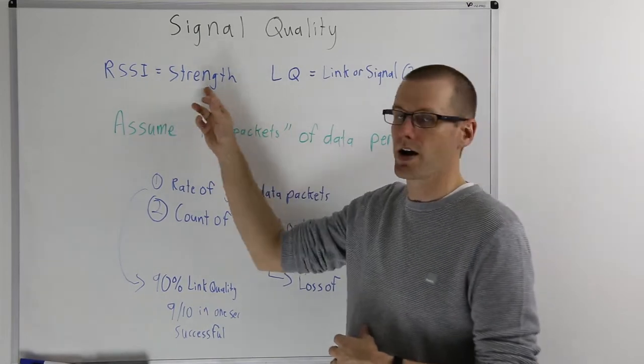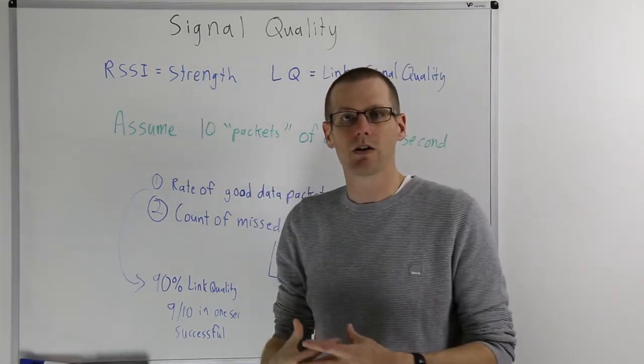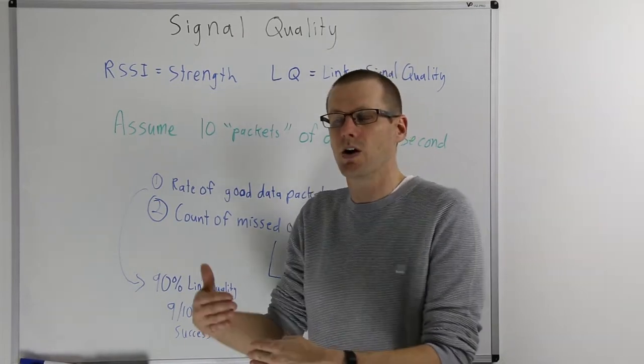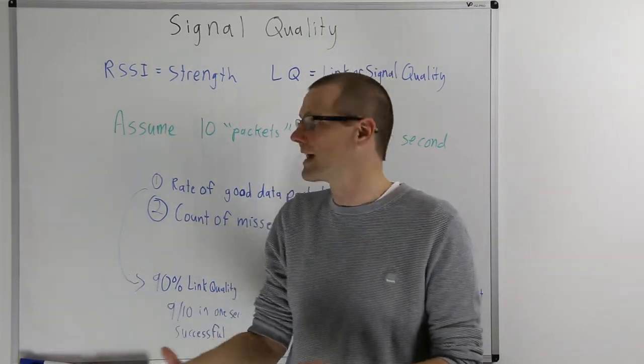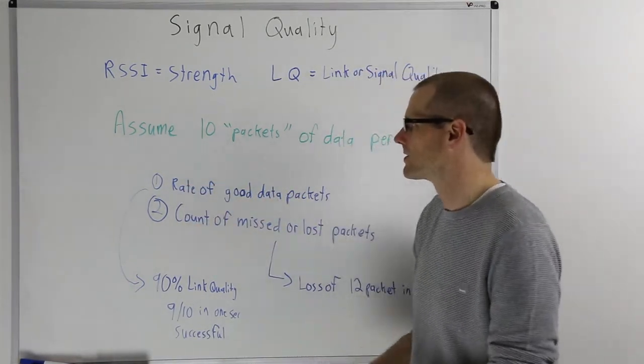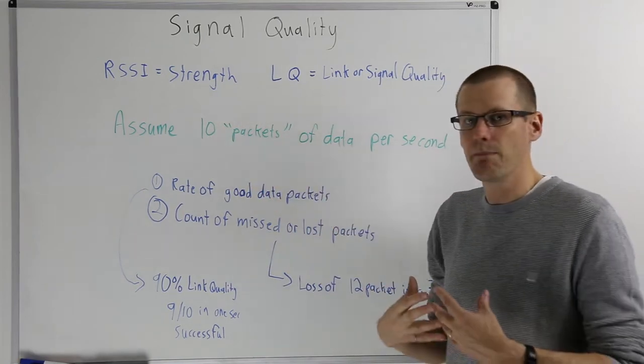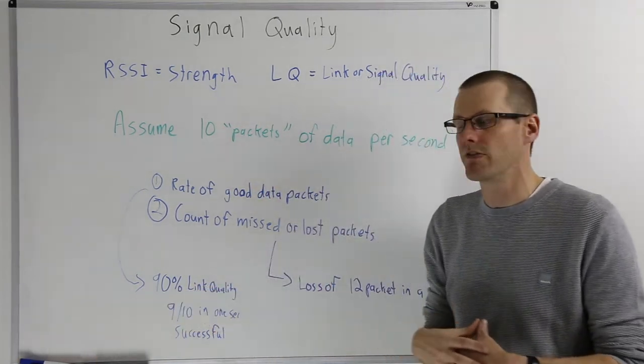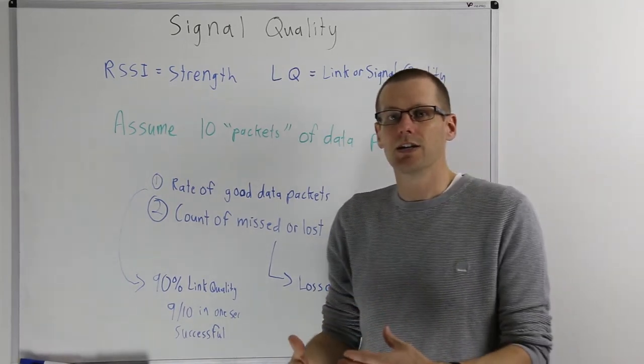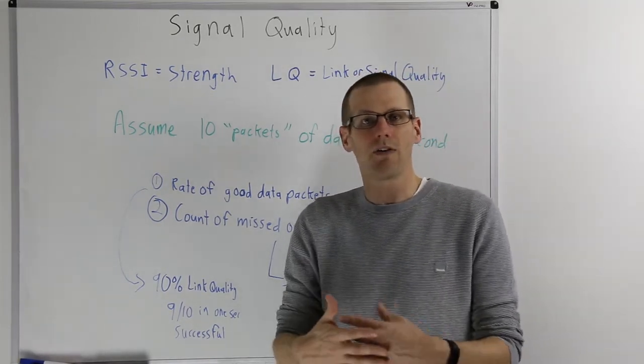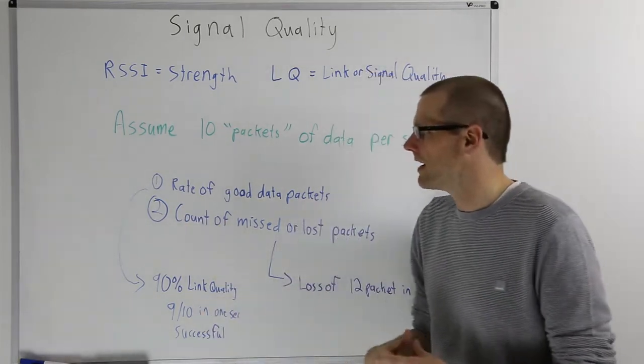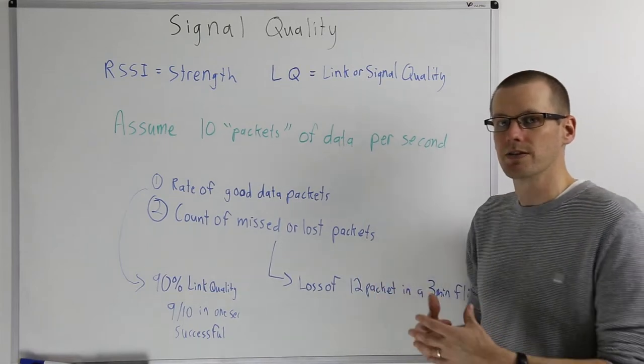So the next thing to talk about here is our signal quality or link quality. RSSI told us about the strength and our link quality is going to tell us if the information is actually getting to where we want it to be received by. And there's a couple different ways that radio systems out there can do this for us. Assume that we have 10 packets of information that is going to our receiver from our transmitter every second.